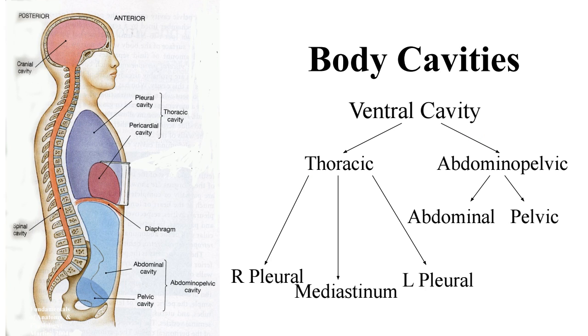As we move to the front of the body, we get the ventral cavity. Ventral is anterior, or the front. So the ventral cavity is going to be along the front of the body.